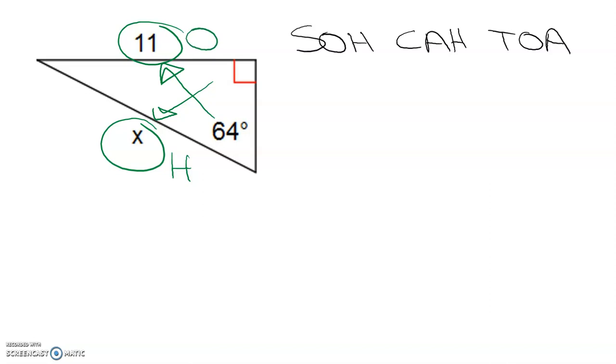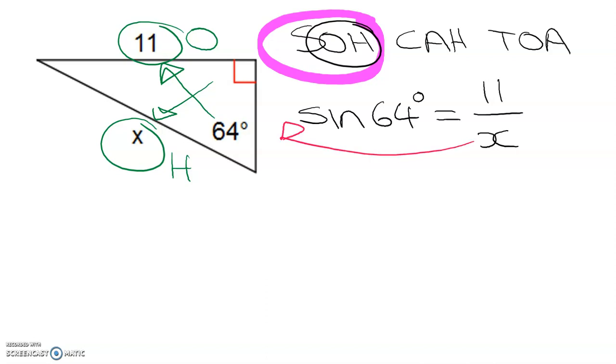So I now need to find the identity that has O and H and that is SOH or sine. Write down the equation sine of 64 degrees equals O over H as given by SOHCAHTOA so it's 11 over X and then solve for the unknown. So to get X by itself we have to multiply by X and then divide through by sine 64. Enter that into your calculator and you end up with 12.2.